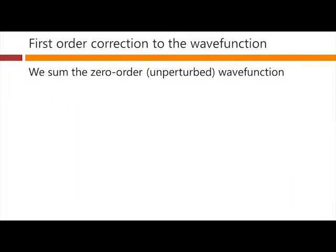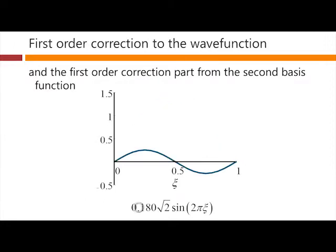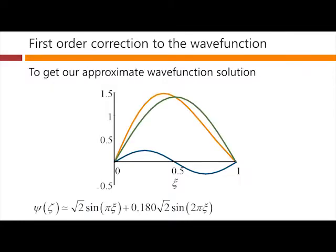We can sum the zero-order unperturbed wave function, that's this one here, with its formula here, and we can add on to that the first-order perturbation theory correction from the second basis function that we just worked out. Here's our 0.180. Add the two of them together, and we get this orange curve. So this is our calculated approximate corrected wave function. And it comes from the sum of the unperturbed wave function plus this additional correction to it. So you can see this is positive here, so the orange curve is above the green curve, and this is negative here, so the orange curve is below the green curve.